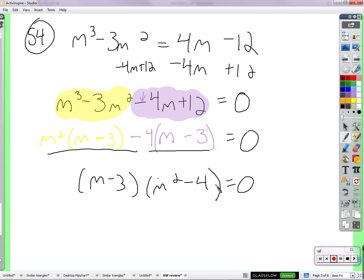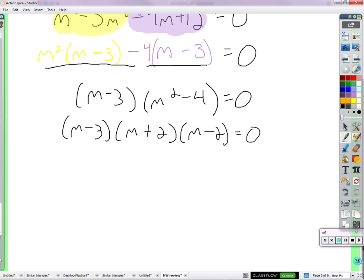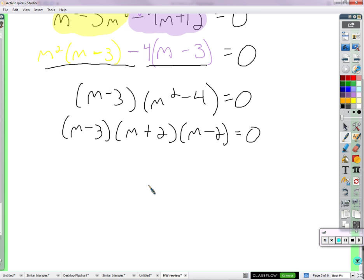This guy here is a difference of squares. So it can be factored even further. (m plus 2) times (m minus 2). So we've got it factored as much as it can be factored. And what we see is 1, 2, 3 factors.